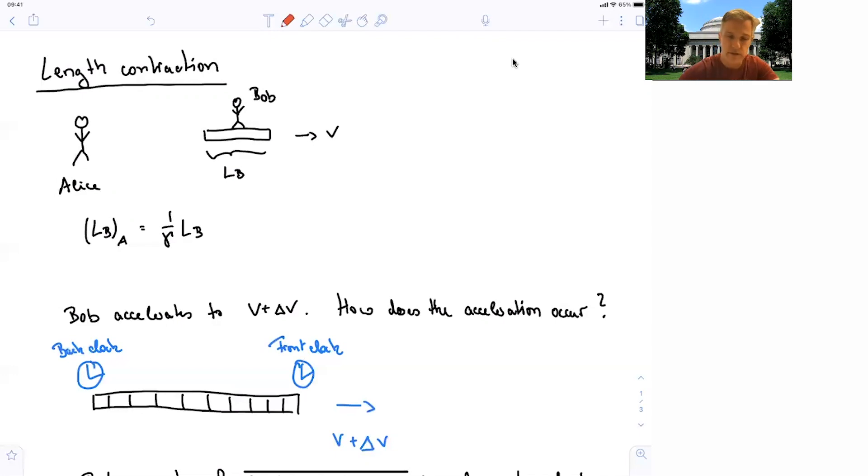So the situation here is, as we have seen a few times already, we have Alice being at rest and Bob is moving with a velocity V. And what we are interested in then is this object here, which might be a rod of some sort. You can think about a spacecraft if you want, but a specific object which at rest has a length LV.